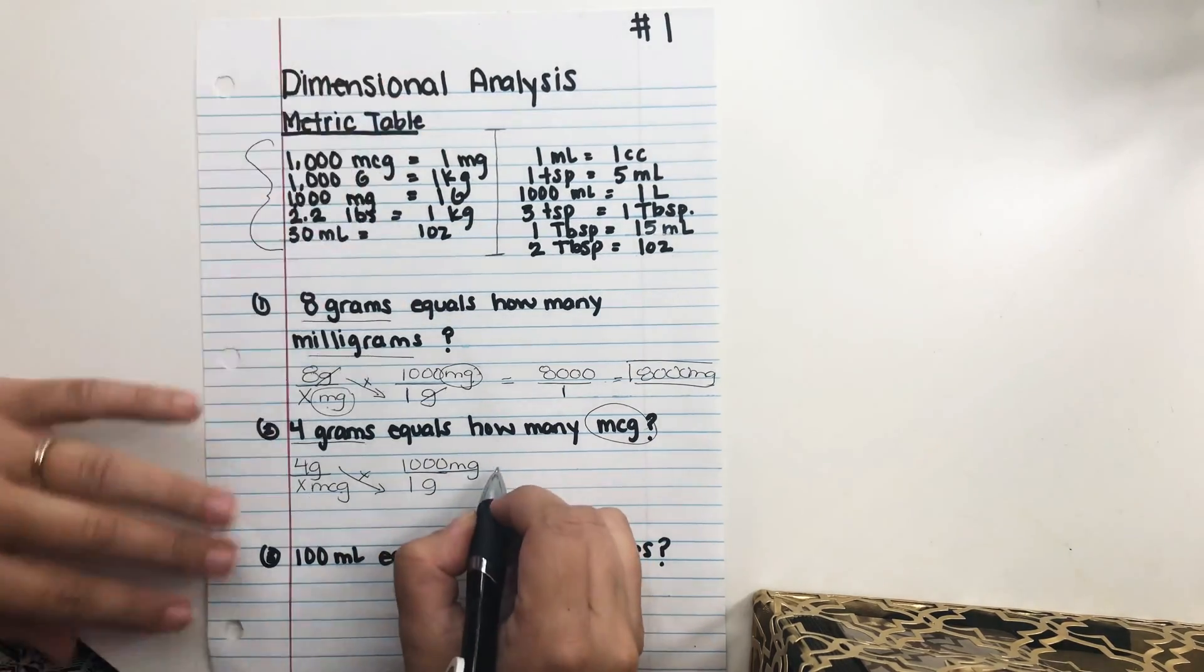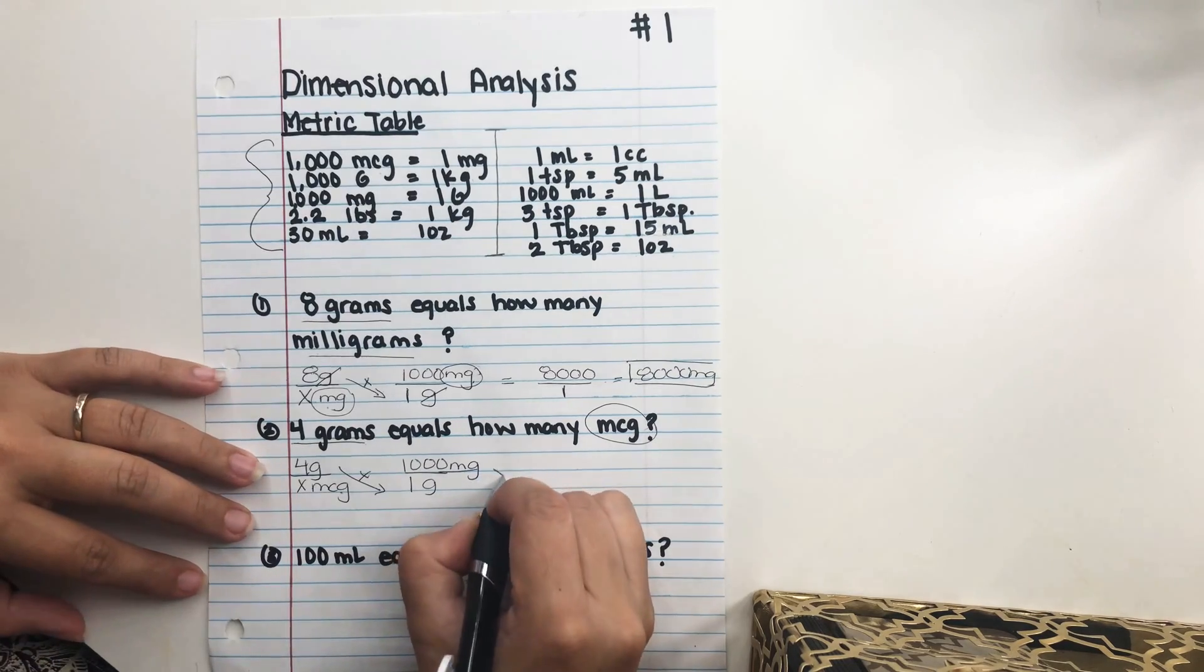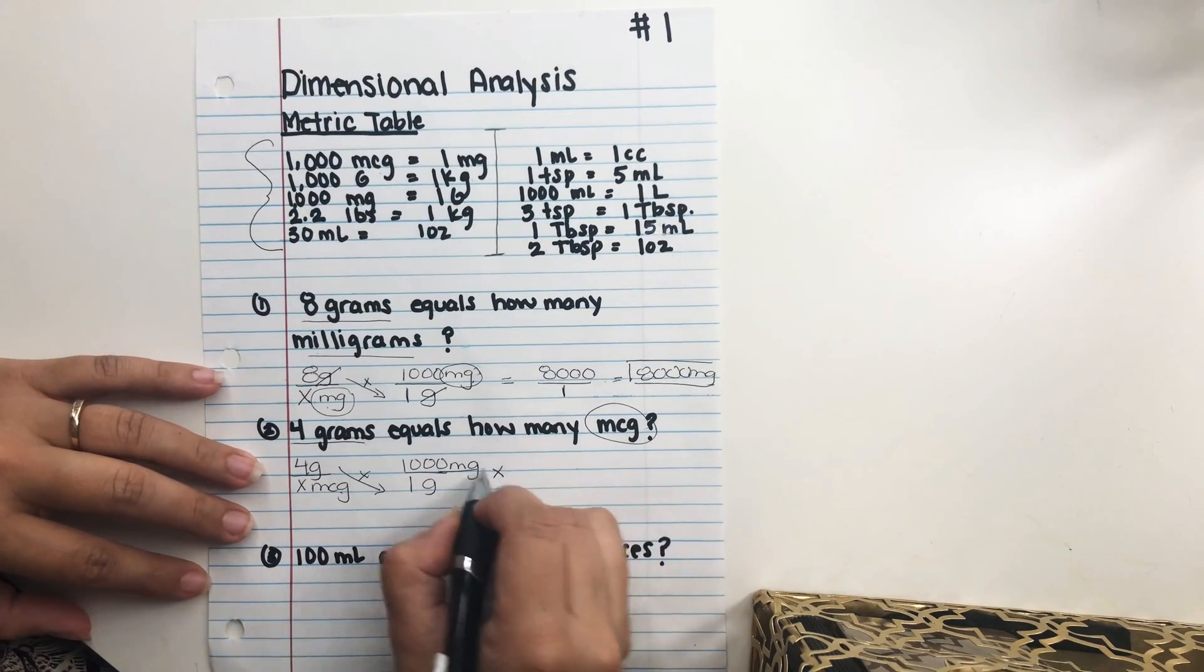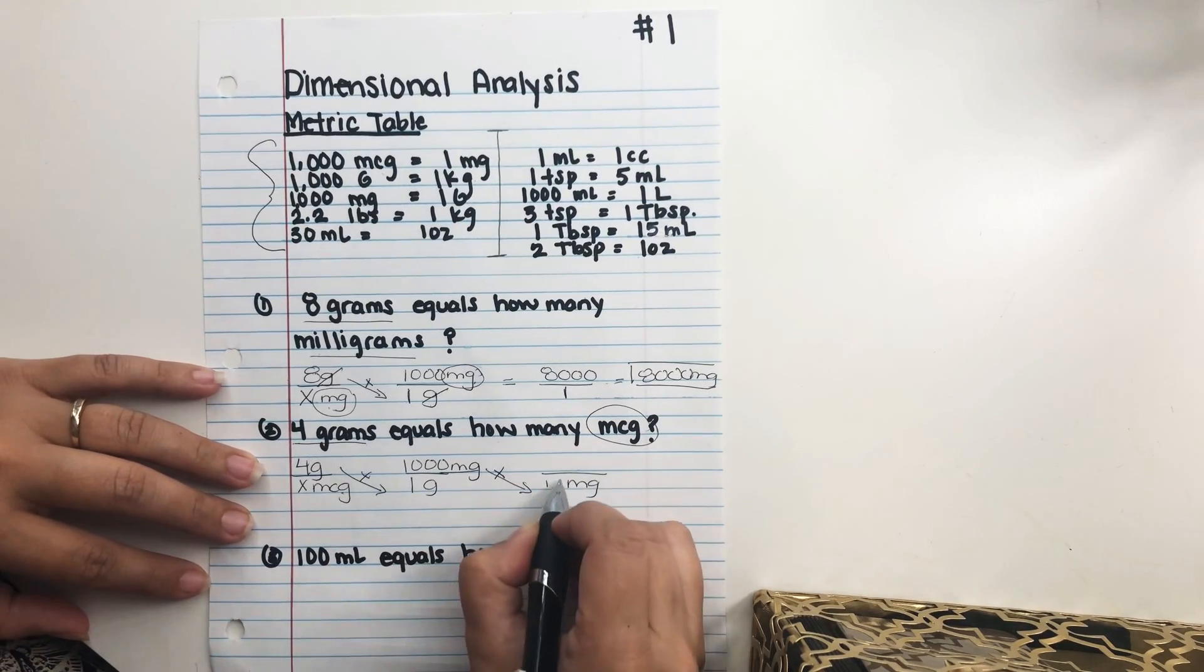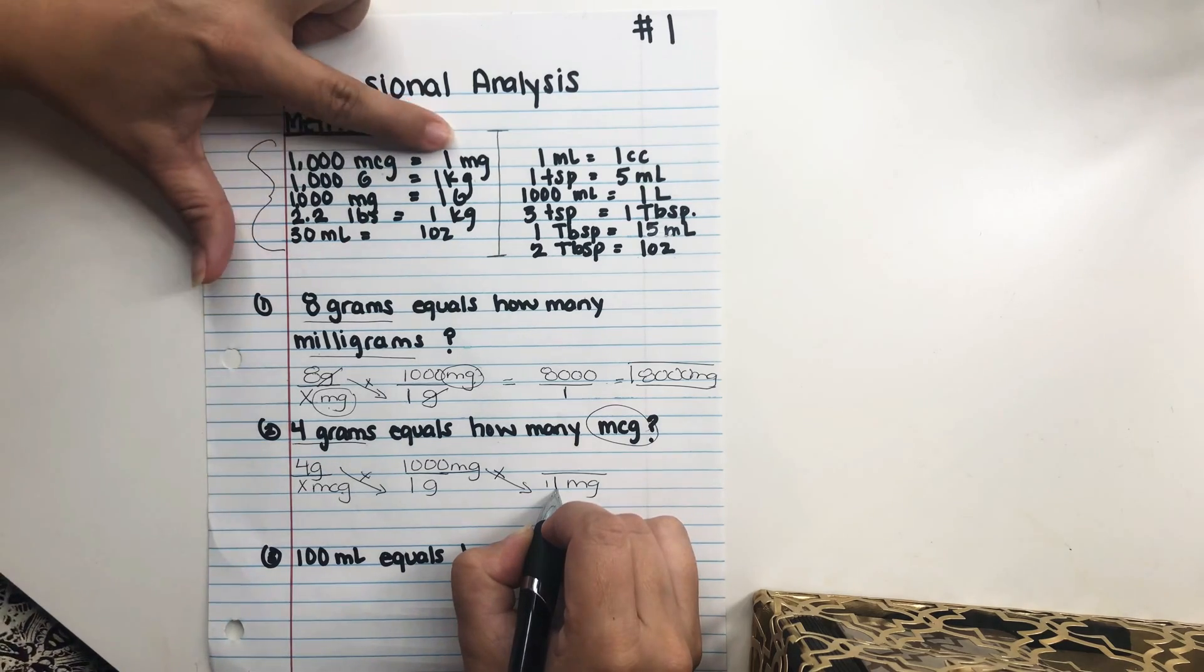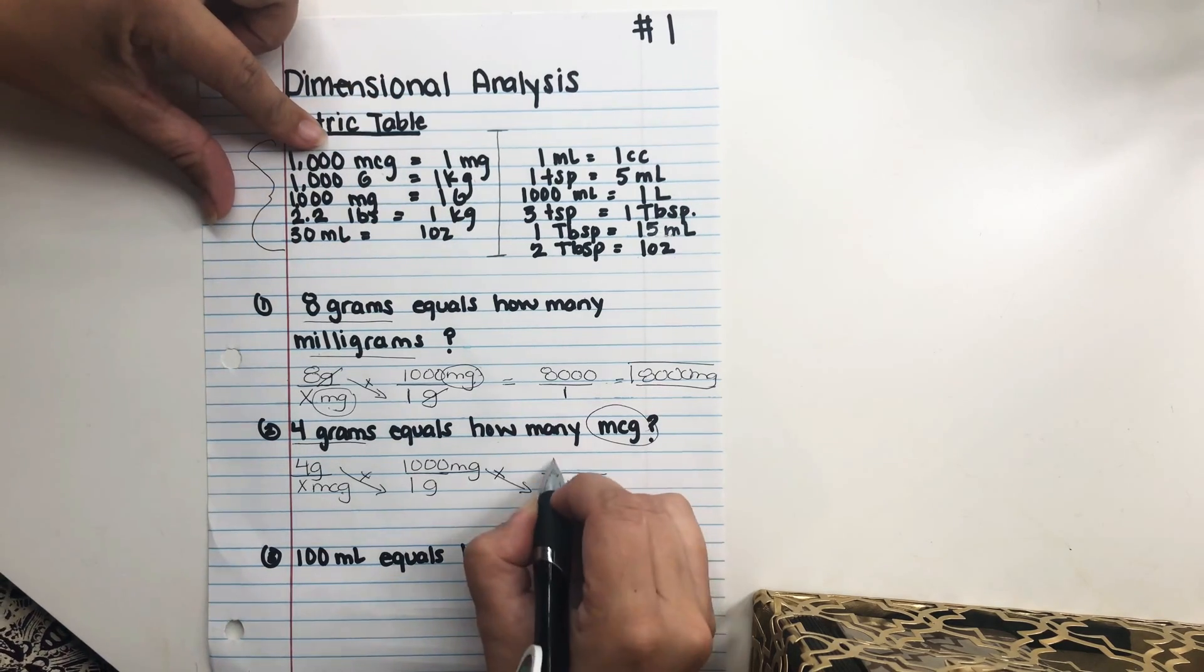But we need to go a step further. Let's go ahead and see. Since we have milligrams here, we have to go with milligrams here. So milligrams. So how much does 1 milligram equal in micrograms? Well, 1 milligram equals 1,000 micrograms.